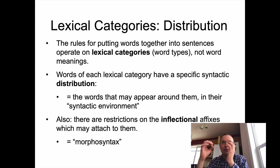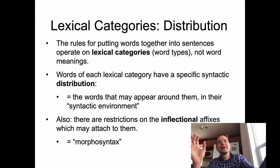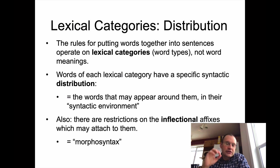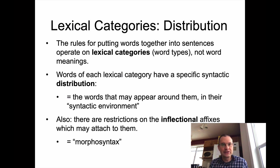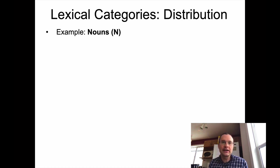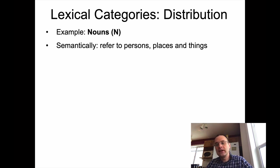The syntactic rules in language operate on lexical categories, not their meanings. Words of each lexical category have a specific syntactic distribution — this is sort of like the distribution of phonemes or allophones in phonology. Specific words are only going to fit nicely into specific syntactic environments, i.e. the words that appear around them in the sentence. There are also properties for lexical categories more specific to how the word is formed: restrictions on the inflectional affixes that may attach to a specific kind of word. This is where morphology and syntax come together into what we call morphosyntax.